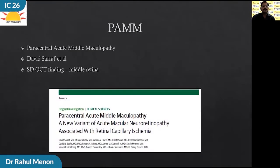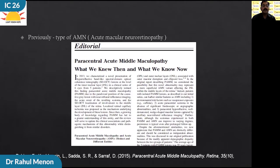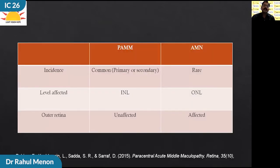Next is Paracentral Acute Middle Maculopathy, or PAM, first described by David Sarraf and group. Technically it is an SD-OCT finding in which the middle retina is affected. Previously there was confusion whether PAM is a type or subset of AMN, or acute macular neuroretinopathy, but the authors have clearly stated that PAM is entirely different from AMN. Even though PAM and AMN share a common ischemic microvascular origin, AMN is seen in younger individuals and is very rare, while PAM is much more common. Primary PAM is idiopathic while secondary PAM is associated with other vascular diseases. On OCT, PAM affects above the OPL, while in AMN the lesion is below the OPL, and usually the ellipsoid zone and ELM layer are unaffected in PAM.